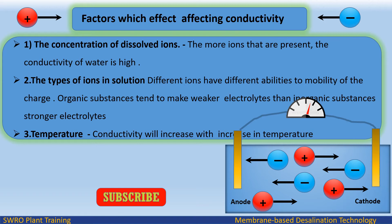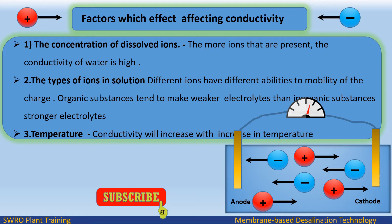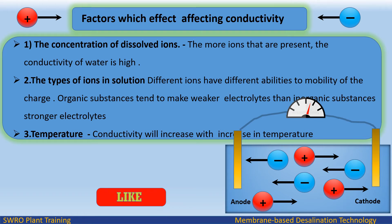Factors affecting conductivity: 1) The concentration of dissolved ions — the more ions present, the higher the conductivity. 2) The types of ions in solution — different ions have different charge mobility. Organic substances tend to make weaker electrolytes than inorganic substances, which are stronger electrolytes. 3) Temperature — conductivity will increase with an increase in temperature.